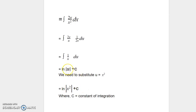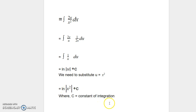We want to express our solution in terms of x, not in terms of u. So we replace u with what we defined it as: x squared. Therefore the answer is ln of x squared plus c, where c is the constant of integration.